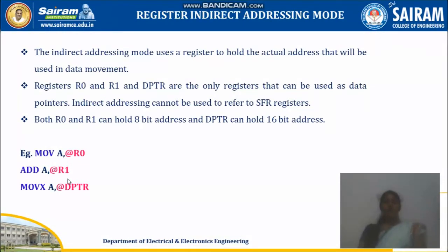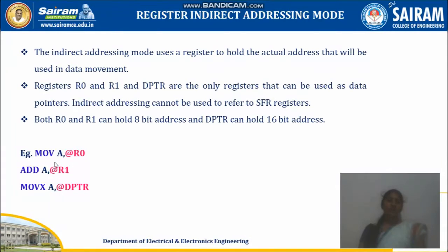Similarly, consider ADD A, @R1. Before this, suppose you use MOV R1, #45H. That means 45H is stored in R1. So at the 45th location, whatever data is available will be added with the accumulator, and the result of the addition will be saved in the accumulator.